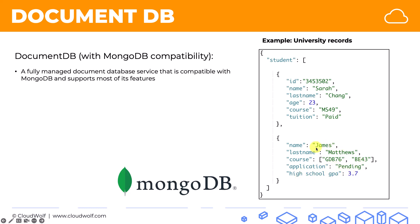As you can see, even though some parts of these two records are similar, like name and last name, there are parts that are different. Like course — here there's only one course, but here there's a whole array of courses. Here we've got fields ID, age, and tuition. Here we don't have those fields, but we have application pending and high school GPA. That's clearly because James Matthews is still not enrolled in the course — his application is still pending, whereas Sarah has already been enrolled.